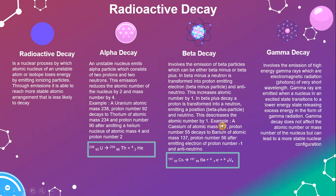For example, cesium of atomic mass 137 and proton number 55 decays to barium of atomic mass 137 and proton number 56, after emitting an electron of proton number negative 1 and an anti-neutrino.